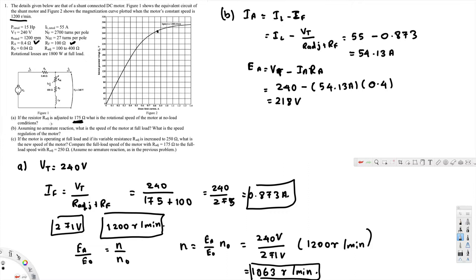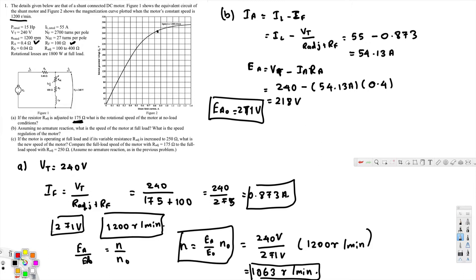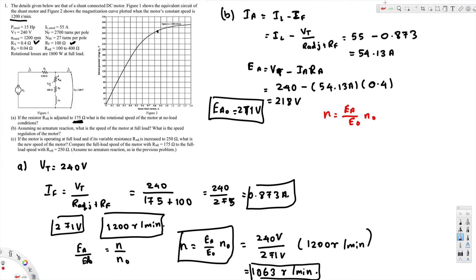Now we need to find the speed n at full load. Since the field is the same as before, E_a0 remains the same at 271 volts. Using the same formula, n equals E_a divided by E_a0 times n0. Here E_a is 218 volts (different from the previous 240V), divided by 271, multiplied by n0 of 1200, giving us 967 revolutions per minute.